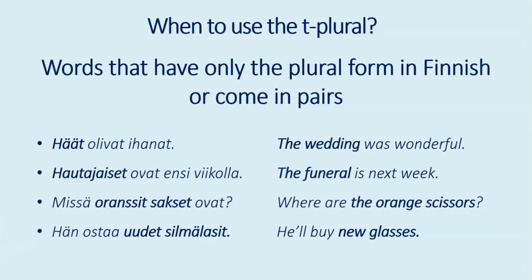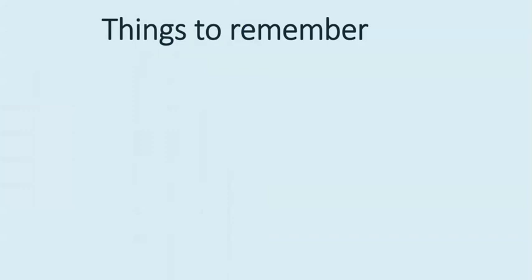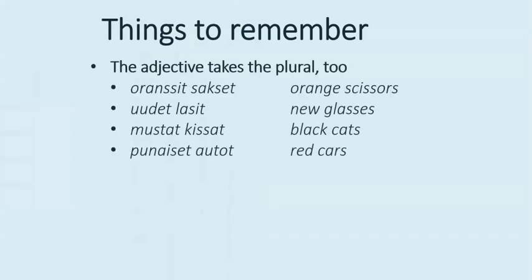Now there are some things to remember. With words like orange scissors and new glasses, you'll notice the change in the adjectives. Unlike in English, if the noun is in plural in Finnish, the corresponding adjective is also in plural. For example: oranssit sakset — orange scissors, uudet silmälasit — new glasses, mustat kissat — black cats, punaiset autot — red cars.